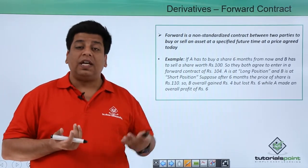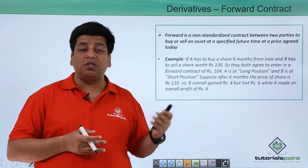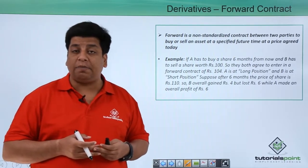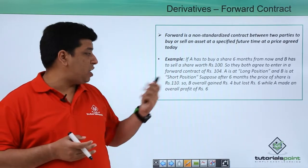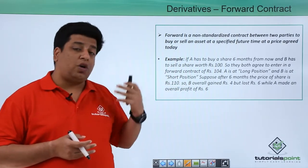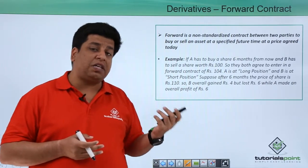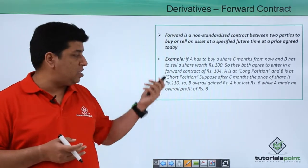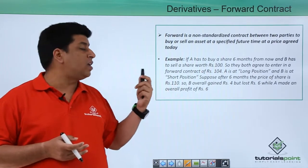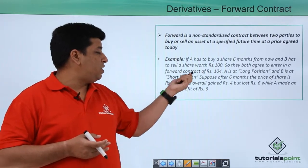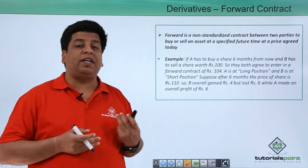Let's take an example of how a forward contract works. There are two parties, A and B. The current price of the share is ₹100. A wants to buy the shares after six months, and B wants to sell the shares after six months. They both agree to enter into a contract where the agreed price is ₹104.